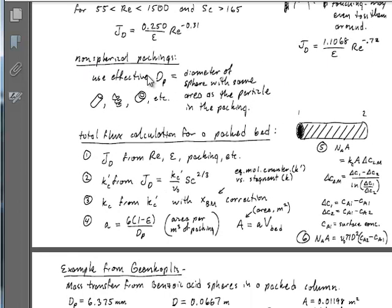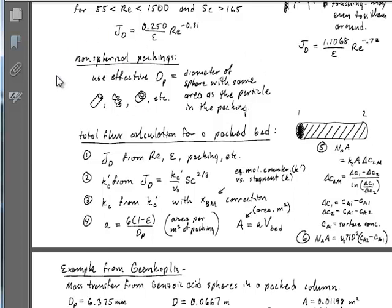For packings, we use an effective diameter defined as the diameter of a sphere with the same surface area as the particle. You estimate the area of the different packing shapes and compute an effective diameter, which goes into the Reynolds number. From the void fraction and the packing diameter, you can also estimate the lowercase 'a' parameter — the area of the packing per volume of the bed — and from there plan the full calculation.